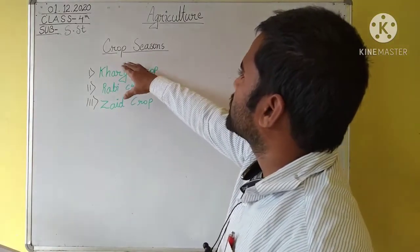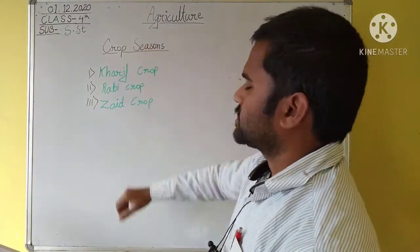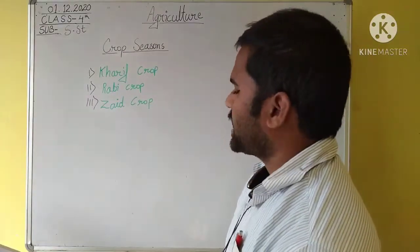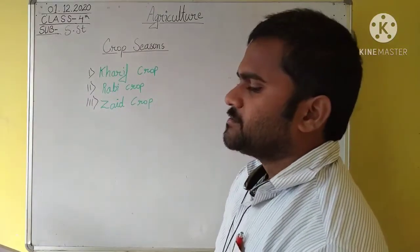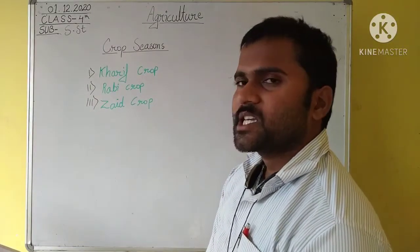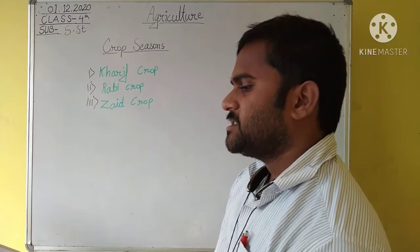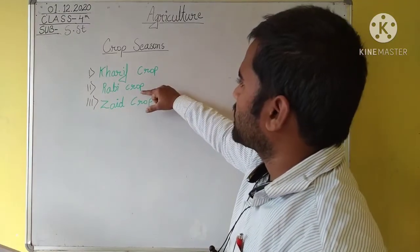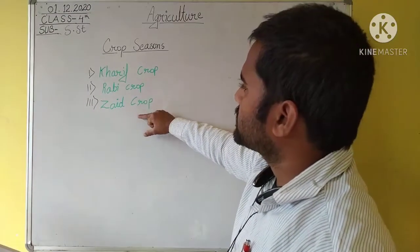Today I'm going to discuss with you crop seasons. There are three types of crop seasons in India. They are Kharif crop, Rabi crop, and Zaid crop.